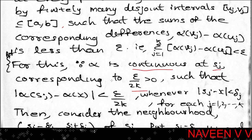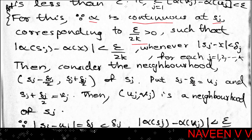For each j, take epsilon divided by 2k, which is greater than 0. Since alpha is continuous at s_j, there exists a corresponding delta_j greater than 0 such that the condition |alpha(s_j) minus alpha(x)| is less than epsilon divided by 2k whenever |s_j minus x| is less than delta_j is satisfied.